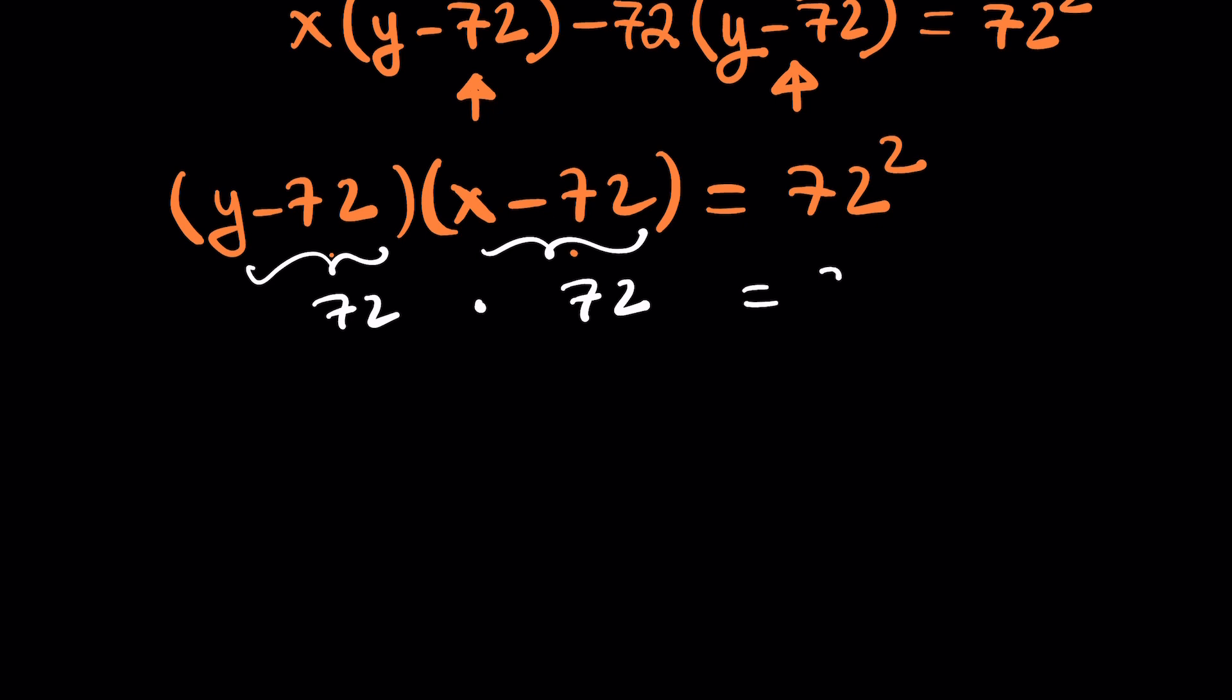So now this gives us the following: x minus 72 equals 72. That means x is equal to 144 and y is equal to 144. Is this really true?